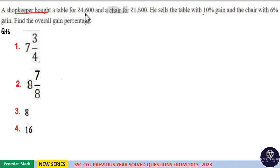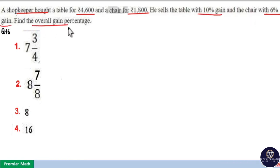A shopkeeper bought a table for $4,600 and a chair for $1,800. He sells the table with 10% gain and the chair with 6% gain. Find the overall gain percentage.